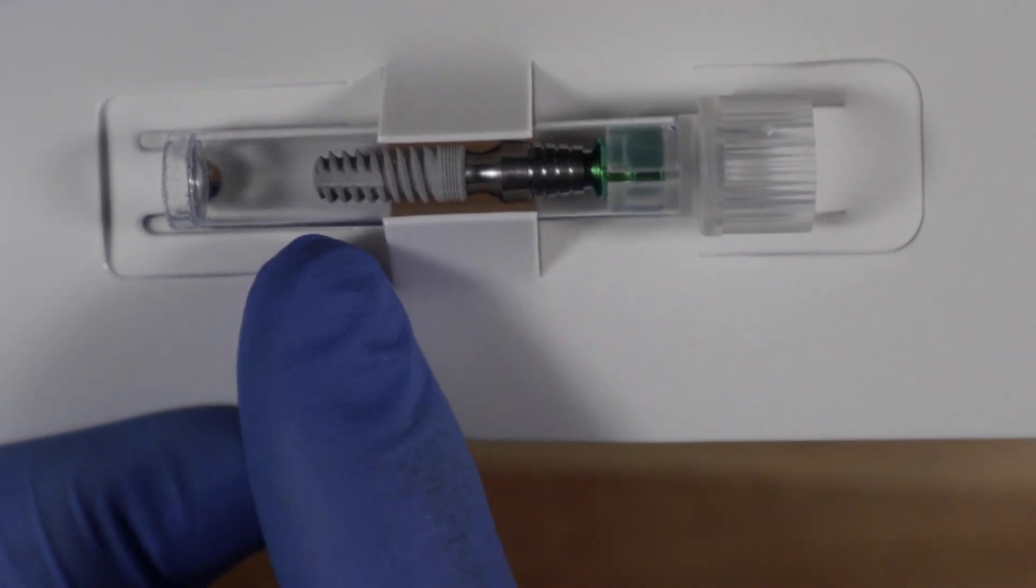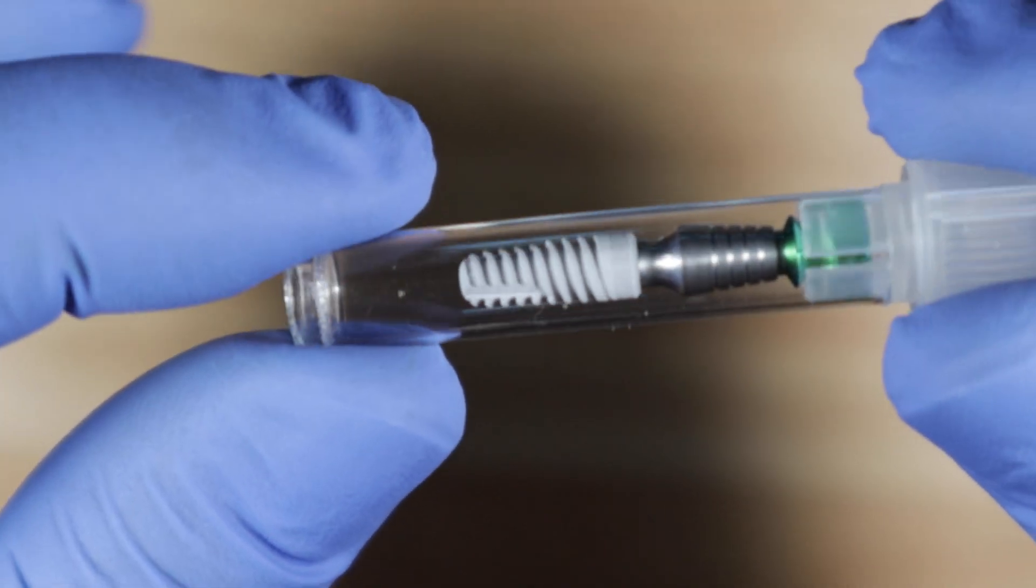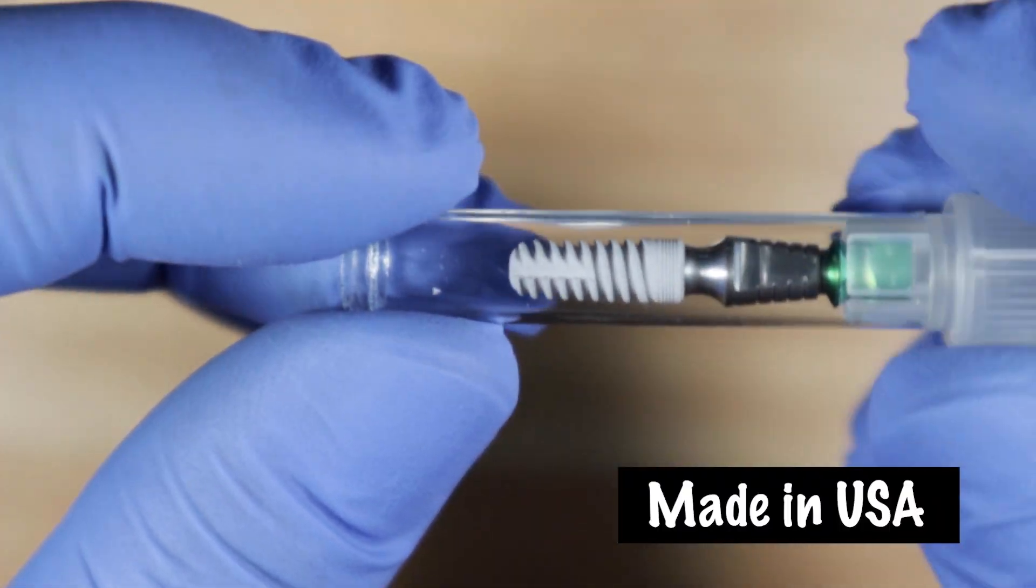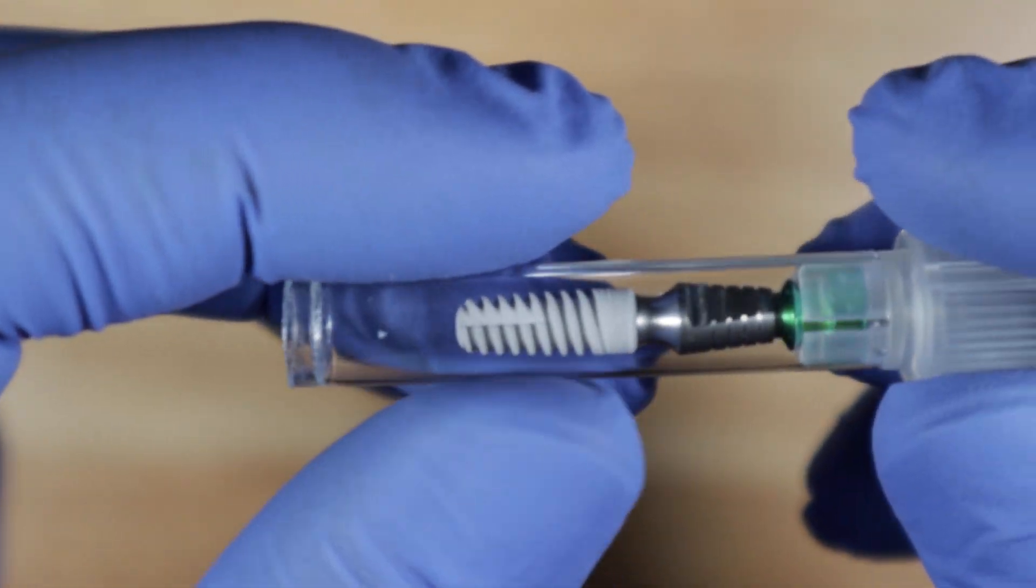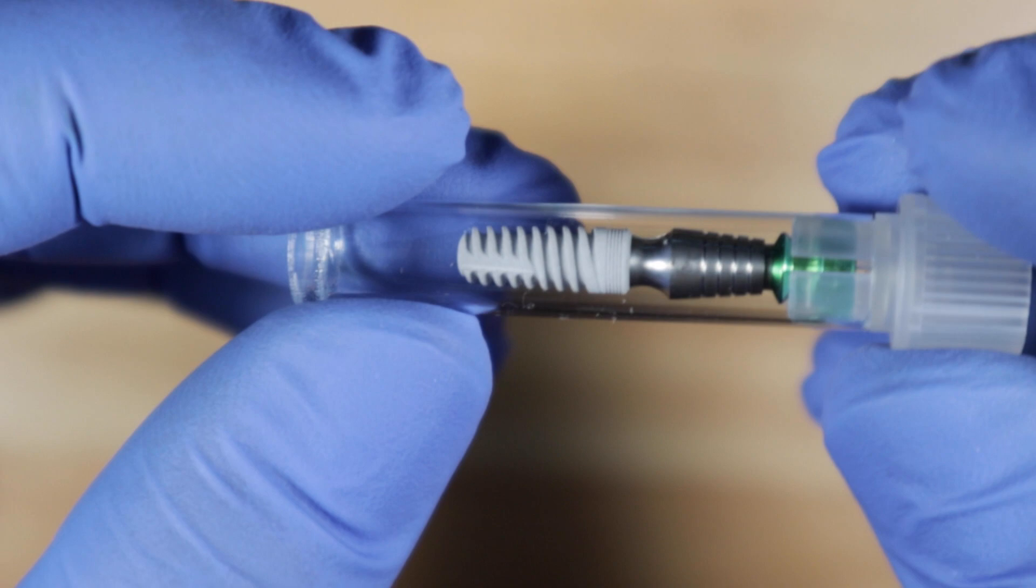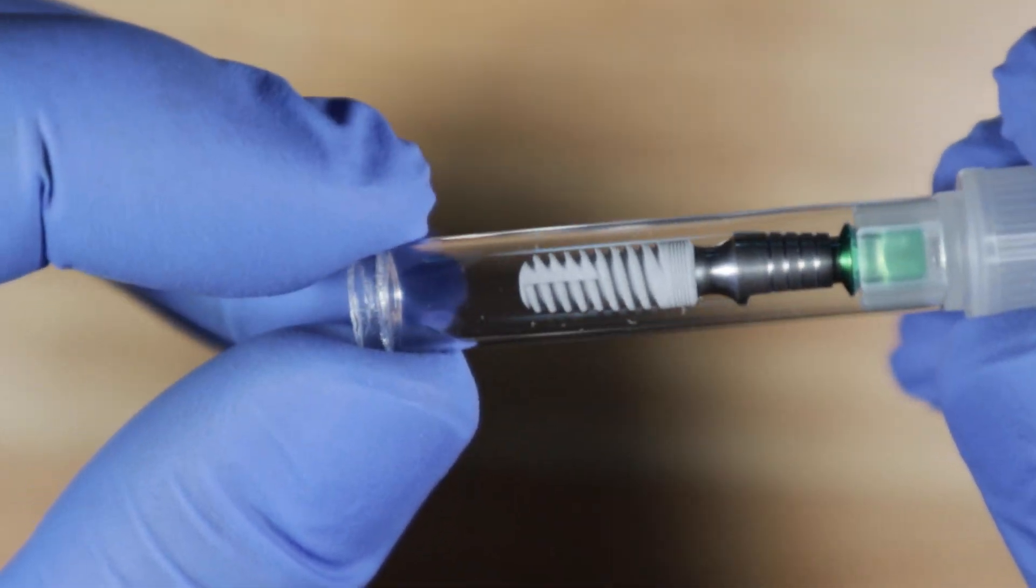Now first let me go over some of the specs of the implant. Let me pop it off of here. So this little screw is made in the U.S. And there's a couple of key things that I look for when we're talking about a dental implant, when you're trying to pick a good dental implant to use. So let's go over those main things right now.